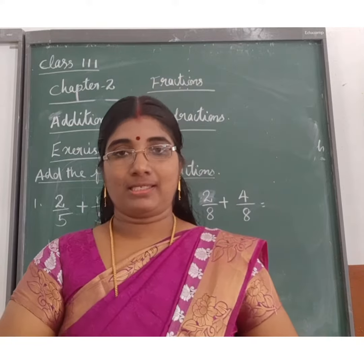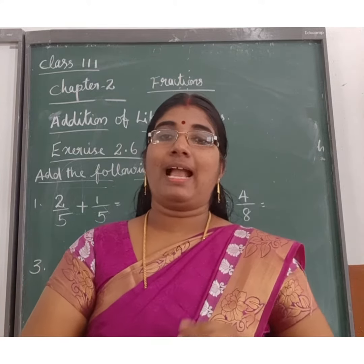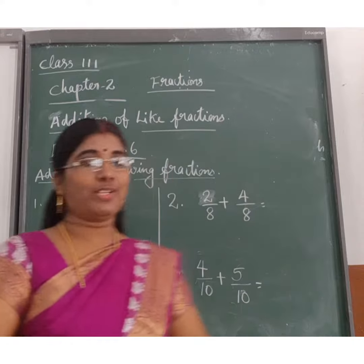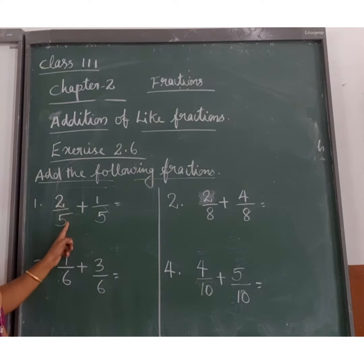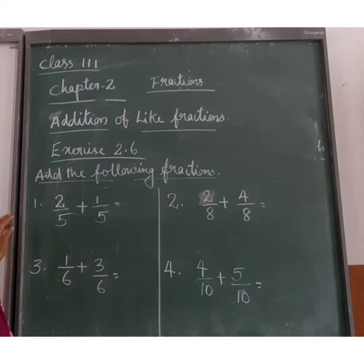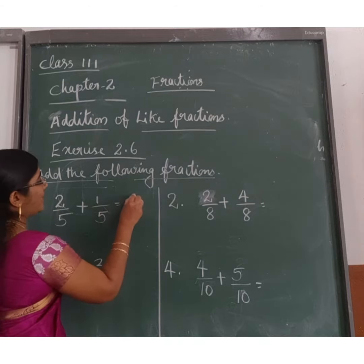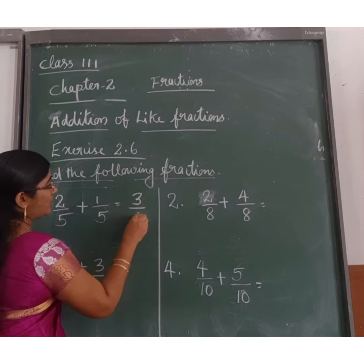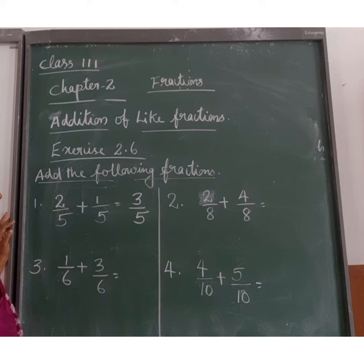Next, Exercise 2.6: add the like fractions. First one: 2 by 5 plus 1 by 5. 2 plus 1 is 3, so it is 3 by 5.